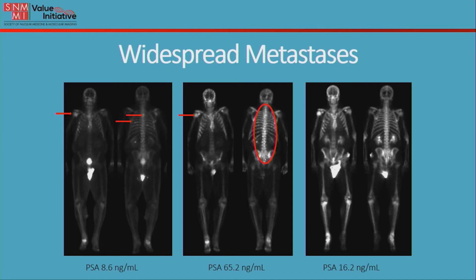Therapy was then changed, and on the last image at the final time point, the PSA has gone down, and much of the disease in the spine and ribs has also decreased — however, the right humeral head actually shows increased uptake. All of these findings suggest that while the patient is overall responding favorably, there is a mixed pattern of uptake indicating perhaps some areas of worsening disease. The point is to show that we can track these changes over time, helping the treating physician know how best to treat and maintain management for the patient.